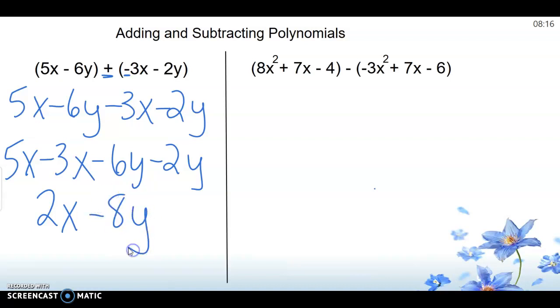Integer rules are so important. 2x minus 8y is it, because that is a non-like term. It's a different variable for the 2 and for the 8, so they cannot be subtracted. Finishes up as a binomial, because those are two non-like terms.